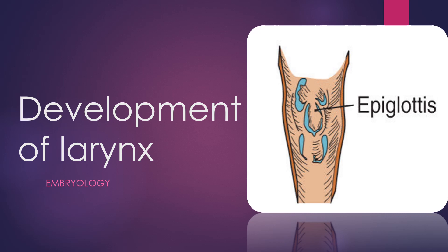Hello friends, welcome back to my channel. In this part we are going to see about development of larynx. The development of larynx occurs in the cephalic part of the foregut, and it is communicating with the pharynx through the inverted U-shaped furcula. You will see the developmental changes that occur in the larynx in this video.